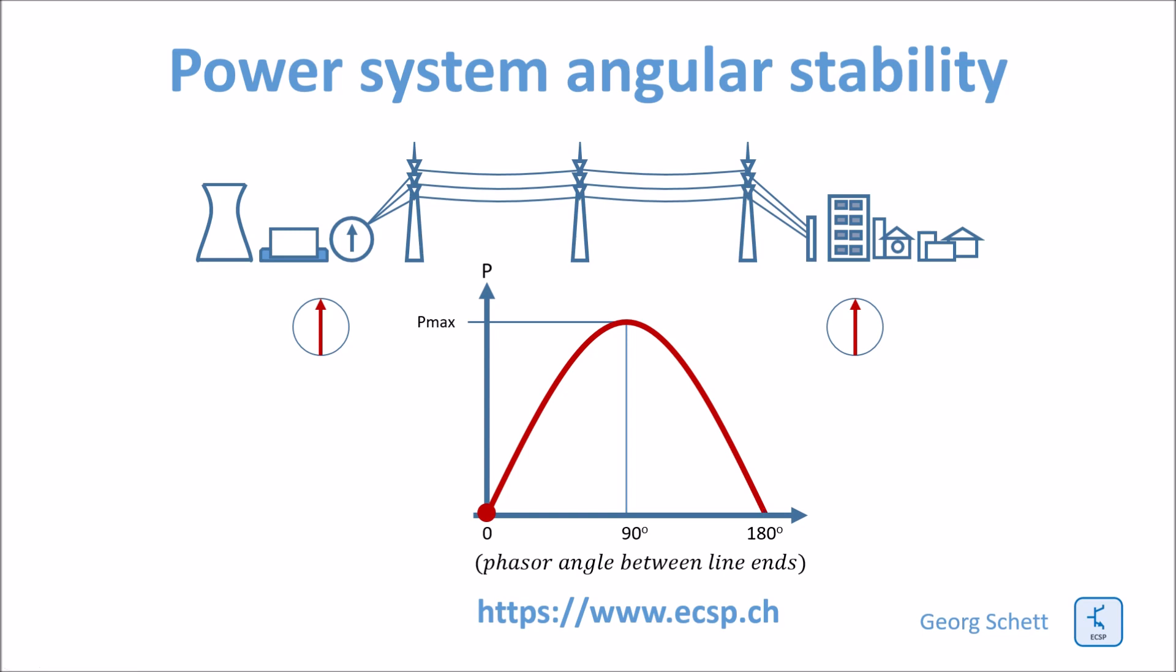If you would now start the experiment starting at a phasor angle difference of zero and you start to increase power, you would start to increase the torque on the motor. You would notice that then the power would increase. At the same time, the torque would increase the phase angle between the two line ends.